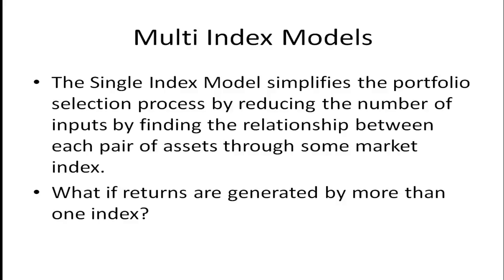In a previous video, I talked about the single index model. The single index model simplifies the portfolio selection process by reducing the number of inputs. It does this by finding the relationship between each pair of assets through some market index. The basic idea is that when you're talking about risk in a portfolio, you don't care about how risky each individual security is — you care about how it interacts with the other securities in the portfolio. There are going to be lots and lots of covariance terms, and if you have to calculate each one directly, that's a lot of inputs. But if you figure out the relationship of each asset to some market index, you can then figure out the relationship between each pair of assets through that market index.